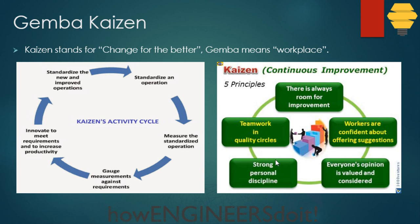The fourth principle is strong personal discipline, without which we will not be able to increase productivity or reduce defects. The fifth principle is teamwork in quality circles — quality circles involve groups of people meeting in circles to discuss how to improve quality. Teamwork helps share the workload, prioritize work, and achieve better results through knowledge transfer.